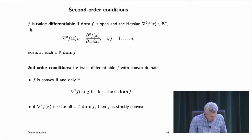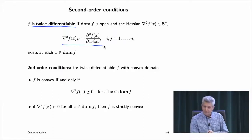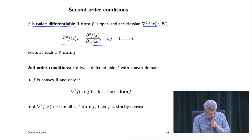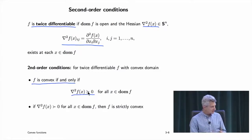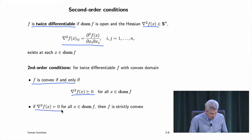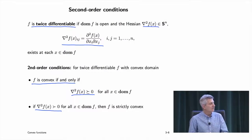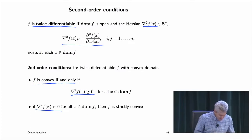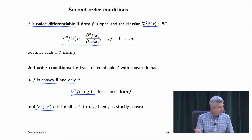Second-order conditions: if a function is twice differentiable, all these partial derivatives exist. The Hessian is the matrix of second derivatives, sometimes written ∇²f(x). The condition: f is convex if and only if its second derivative (Hessian) is non-negative, meaning positive semi-definite. If the Hessian is positive definite, that guarantees strict convexity, but the converse is false — you can be strictly convex without a positive definite Hessian everywhere.